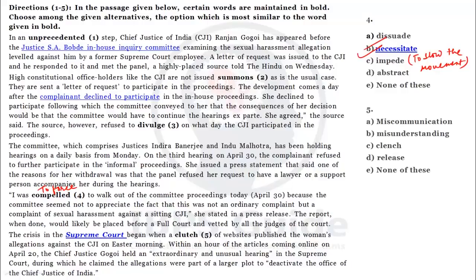The next word is 'clutch.' The sentence reads: the crisis in the Supreme Court began when a clutch of websites published the woman's allegations against the CJI on a Saturday morning. Within an hour of the articles coming online on April 20th, Chief Justice Gogoi had an extraordinary and unusual hearing in the Supreme Court during which he claimed the allegations were part of a larger plot. 'Clutch' means to grasp something tightly. The synonymous words are 'clench' and 'clasp' — clench and clutch are completely synonymous. Therefore our answer is C.